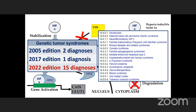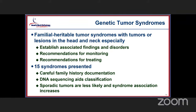Finally, we get to the genetic tumor syndromes — a brand new chapter with 15 different diagnoses incorporated. The reason for this is that these familial inherited tumor syndromes specifically have a major head and neck manifestation. All of the genetic tumor syndromes have been included in their own particular book, which is now available as a beta version online and will be published next year.